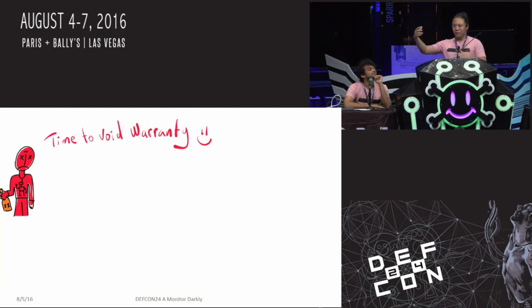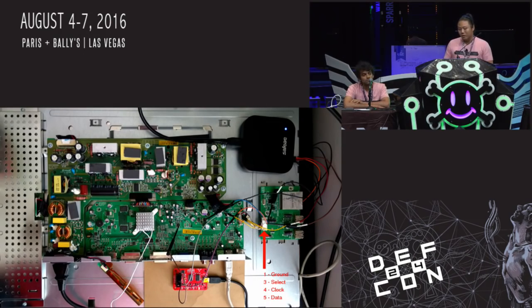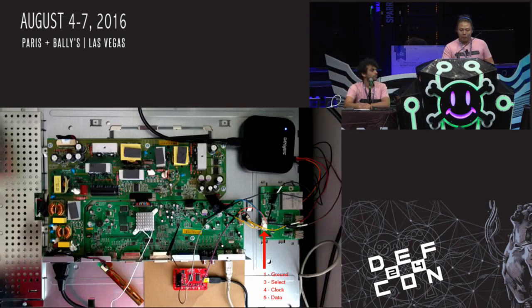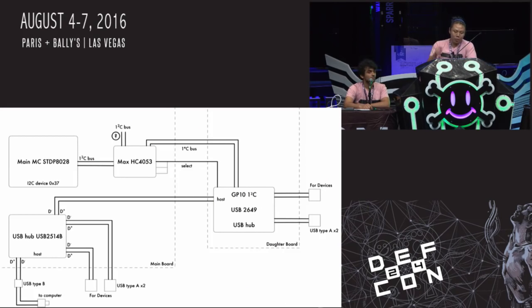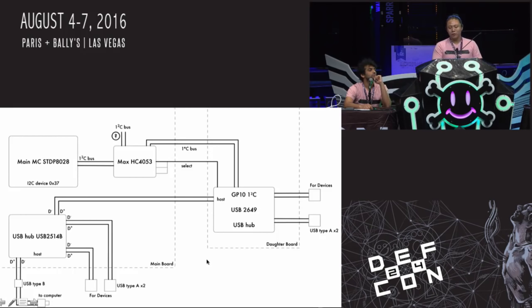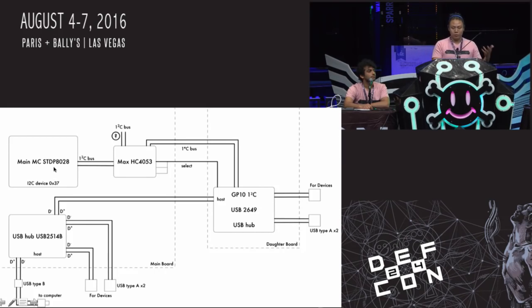This is the mechanism the monitor uses to update firmware from USB into the on-screen display controller. We opened up the back of the monitor — power stuff is on top, digital stuff on the bottom. In the architectural diagram, the main SD Micro chip sits on an I2C bus connected to a multiplexer chip — the 4053 — and that multiplexer sits on a second I2C bus connected to a USB controller. Traffic comes into the USB controller, goes into the I2C bus, through the multiplexer, and ends up directly on the I2C bus for the on-screen display controller. We're able to send raw I2C packets through USB.